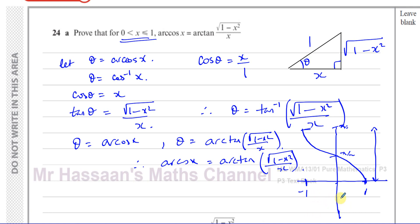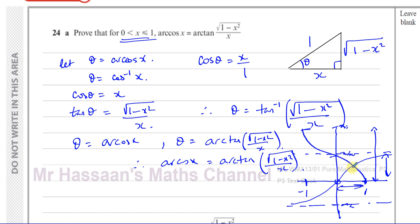For the inverse tangent curve, the range starts at minus pi over 2 and goes to pi over 2, with asymptotes at both ends. Between 0 and 1, the two curves intersect — they both exist and have a common region in that range. So there will be a value of theta for which arc cosine of an angle equals arc tan of an angle in the region where x is between 0 and 1.